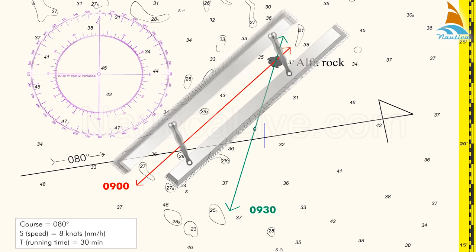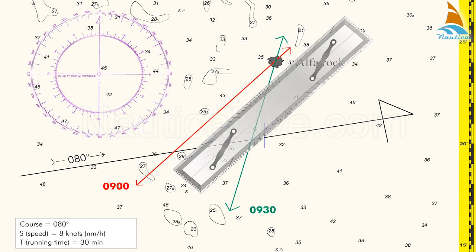Using the parallel ruler, we transfer the 0900 LOP to the blue mark.